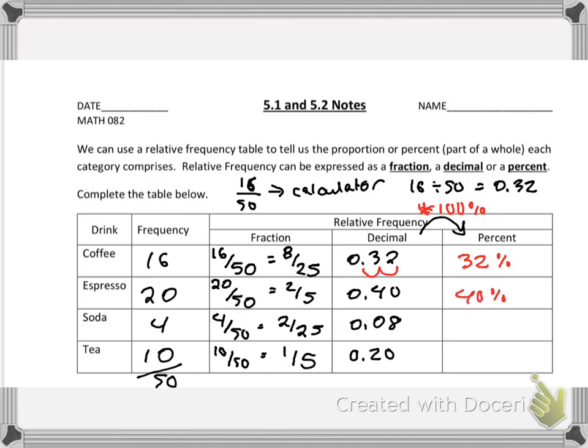So this becomes 32%, this becomes 40%, this becomes 8%, and this becomes 20%. So think about presenting this information at a conference or a meeting.